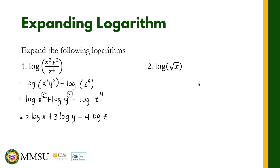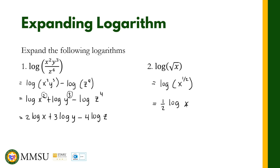For the next one, we have the logarithm of the square root of x. You have to recall your radical expressions here. We can rewrite the square root of x as x raised to one half — converting from radical to fractional exponent, which we covered in chapter one. Now that it's written in exponential form, we can make the exponent one half the coefficient. So this becomes one half logarithm of x. That's how we use the properties of logarithms to expand the expression.